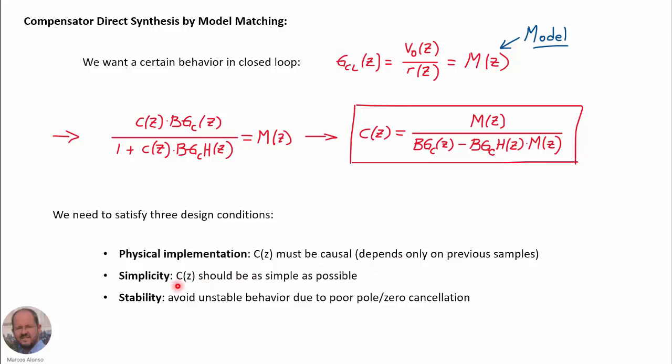The second condition is that the compensator must be as simple as possible to allow easy implementation on a computer. Finally, we must ensure stability. Unstable behavior typically arises from poor pole-zero cancellation, especially when poles and zeros are very close to the boundary of the unit circle.